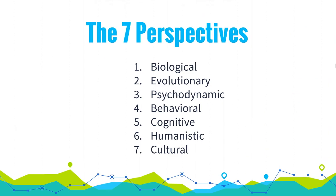Before covering the seven psychological perspectives, it's important to note that psychology developed from both philosophy and biology. Psychology differentiates itself from chemistry and physics because it's less about studying a fixed set of findings and more about a method of asking and answering questions.